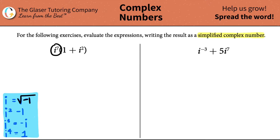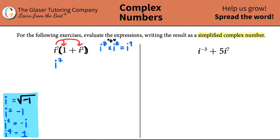So I have i to the seventh being multiplied by a parentheses with two terms inside. I have to distribute. i to the seventh would be multiplied by the one, and also by the i squared. So i to the seventh times one is just i to the seventh. And i to the seventh times i to the second — when you multiply same bases with exponents, you add the exponents. So that is i to the ninth, not seven times two. The difference is if you had i to the seventh squared, then you would multiply.